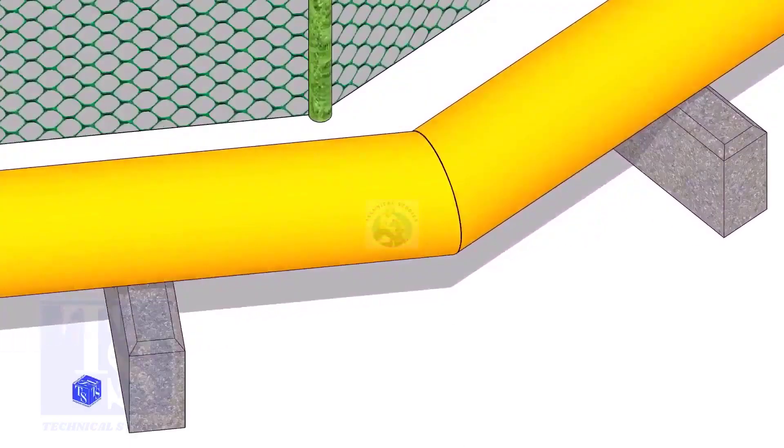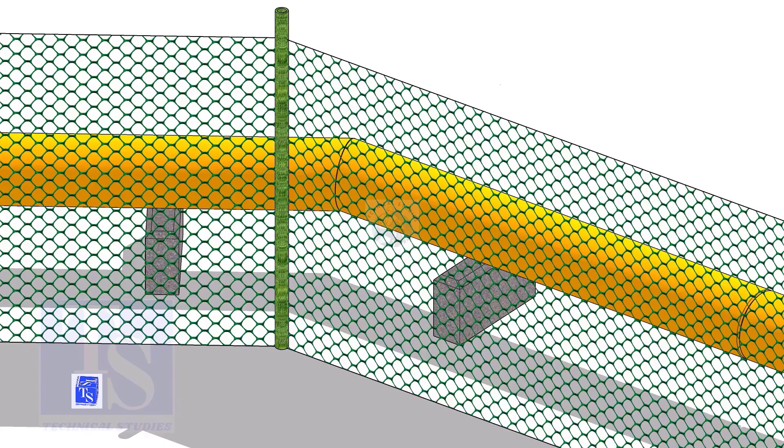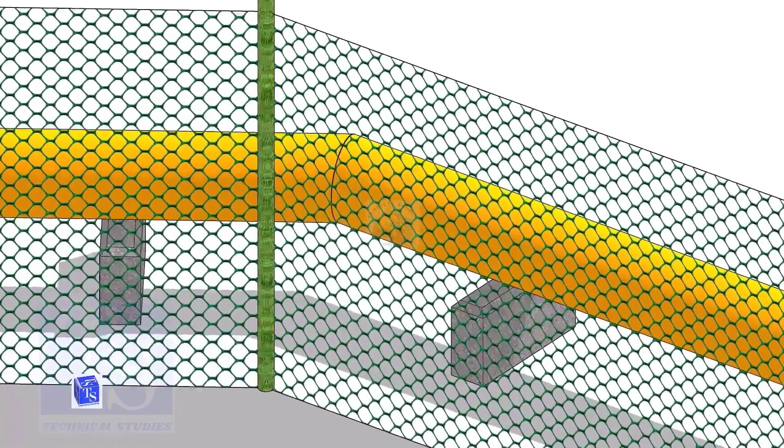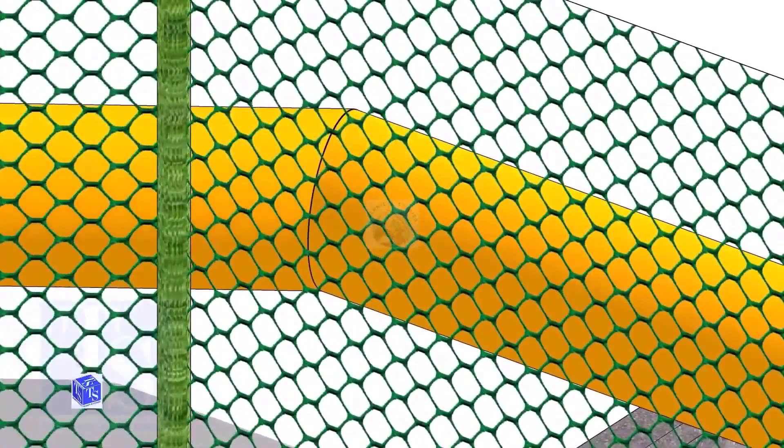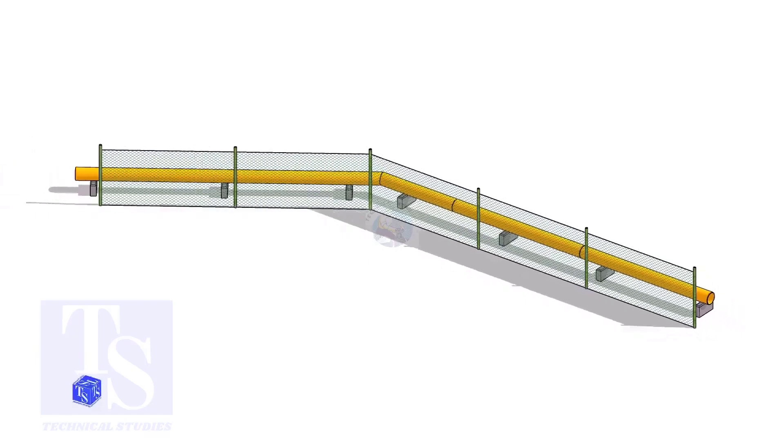Recently, one of the viewers told me he needs to make a pipeline around the fencing of a large plant for water supply. But he has a problem. The fencing has several turns. He wants to know how to make miter cuts on the spot. He asked me how to find the miter cutback easily.